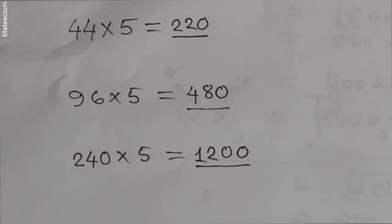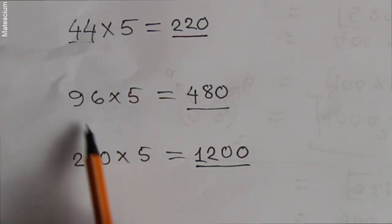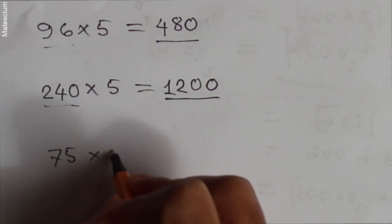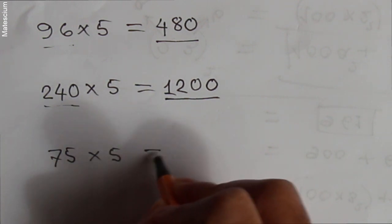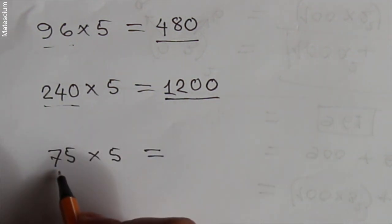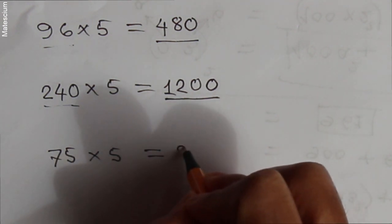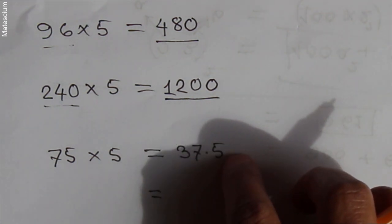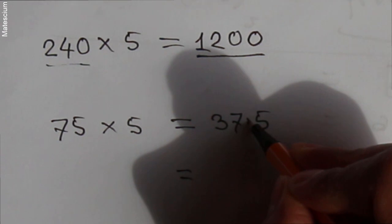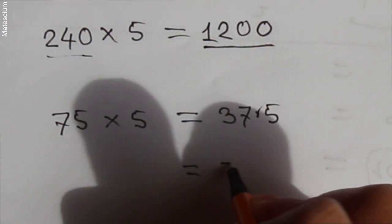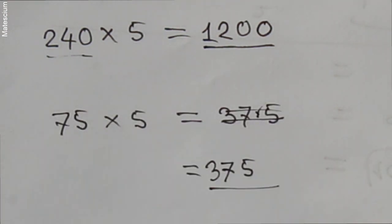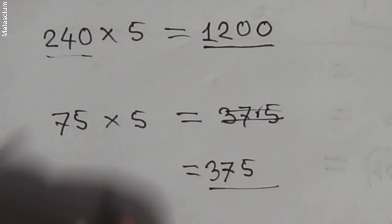Interestingly, those were all even numbers. So if I consider an odd number like 75 times 5 — we do the same process. Half of 75 is 37.5. In this case, we do not write an additional 0. We only have to remove the decimal point. If we remove the point and write those numbers simply: 375. That means 375 is the answer of 75 times 5.